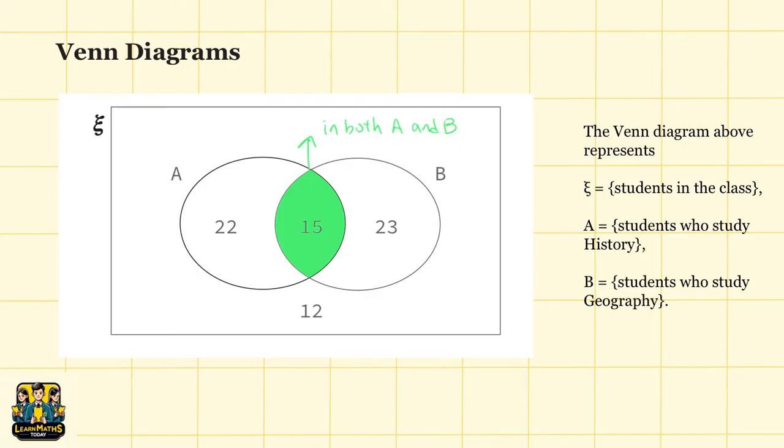The part of the circle that doesn't overlap with any other circle represents elements that are unique to that particular set. For example, here you can see that 22 elements are unique to set A.